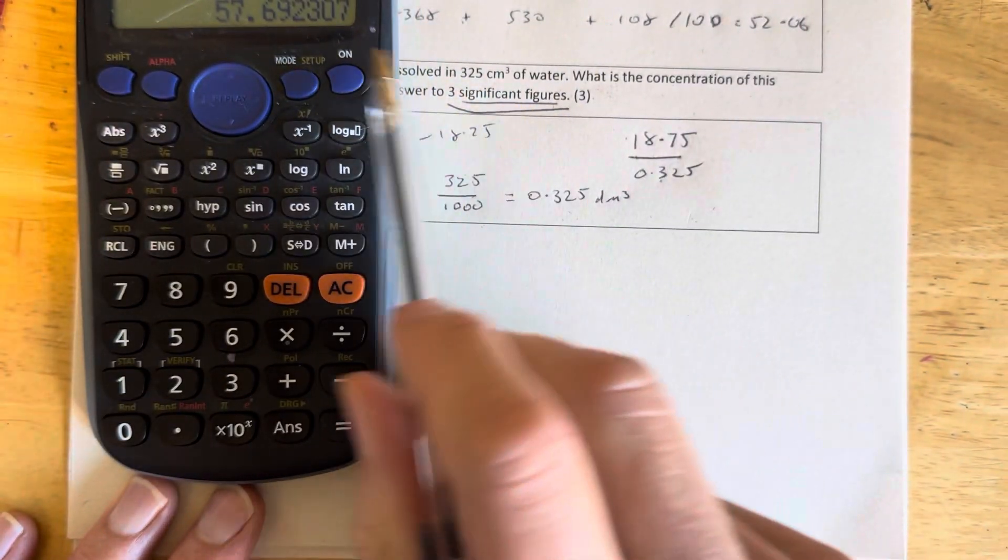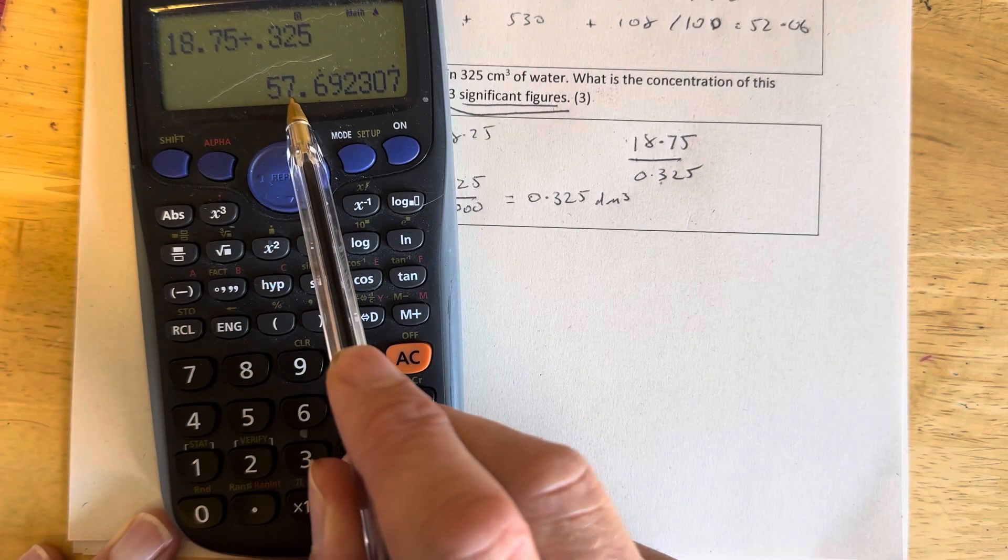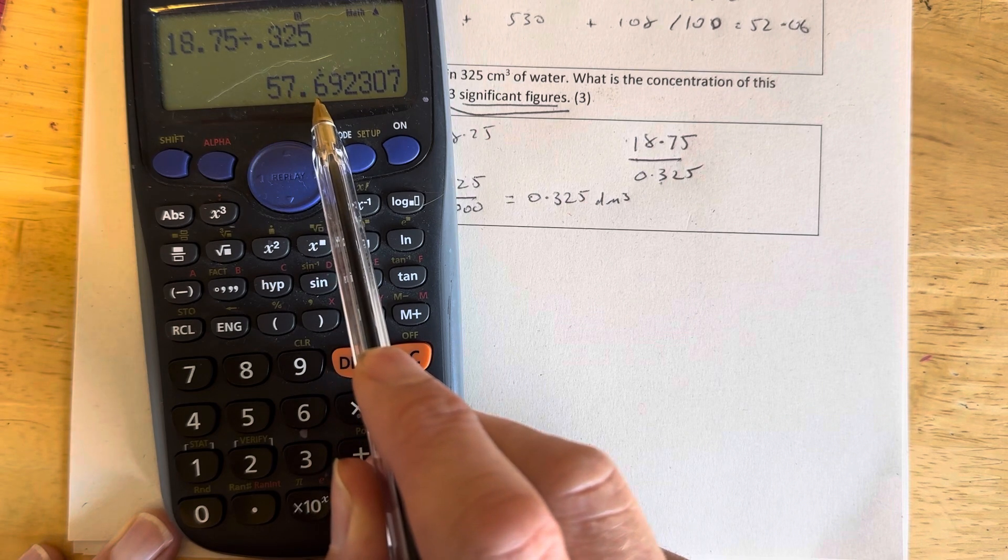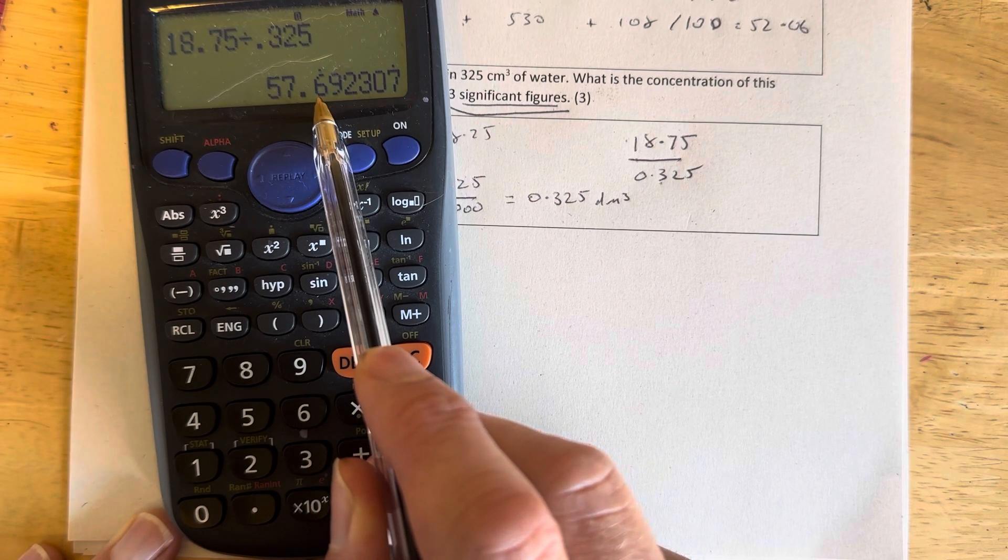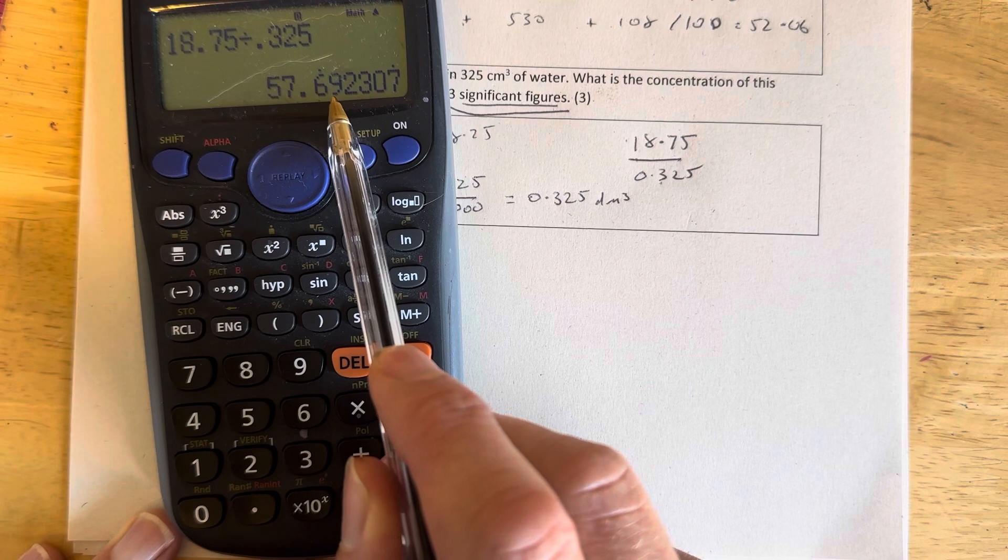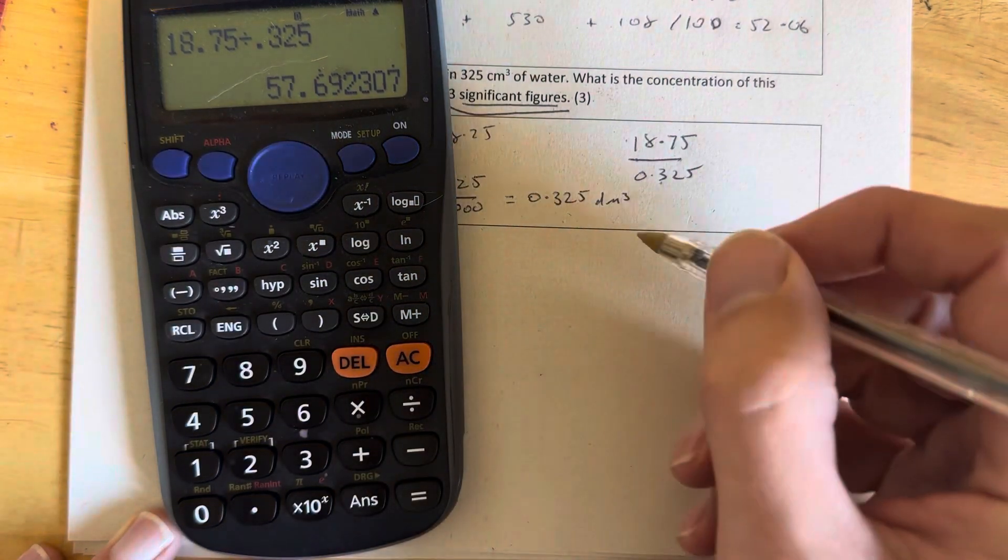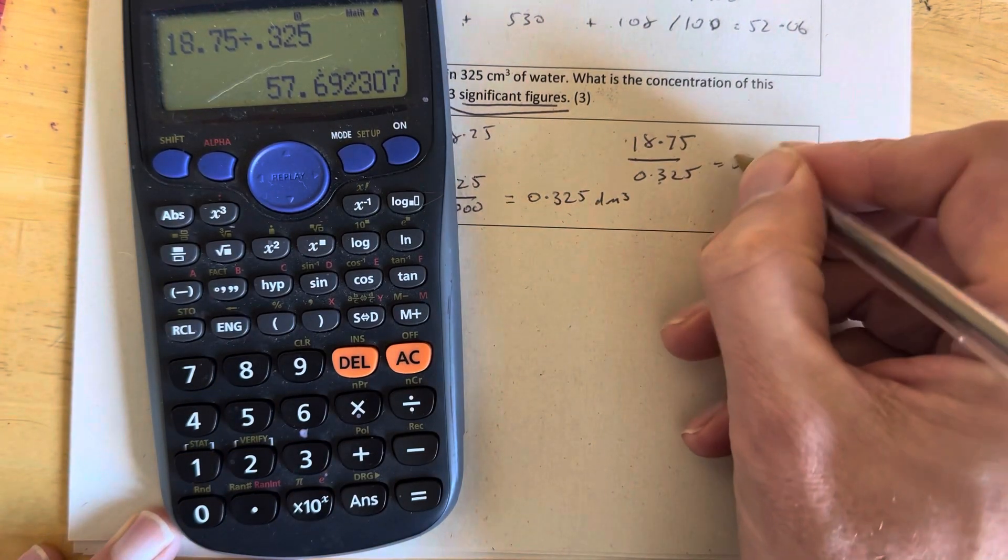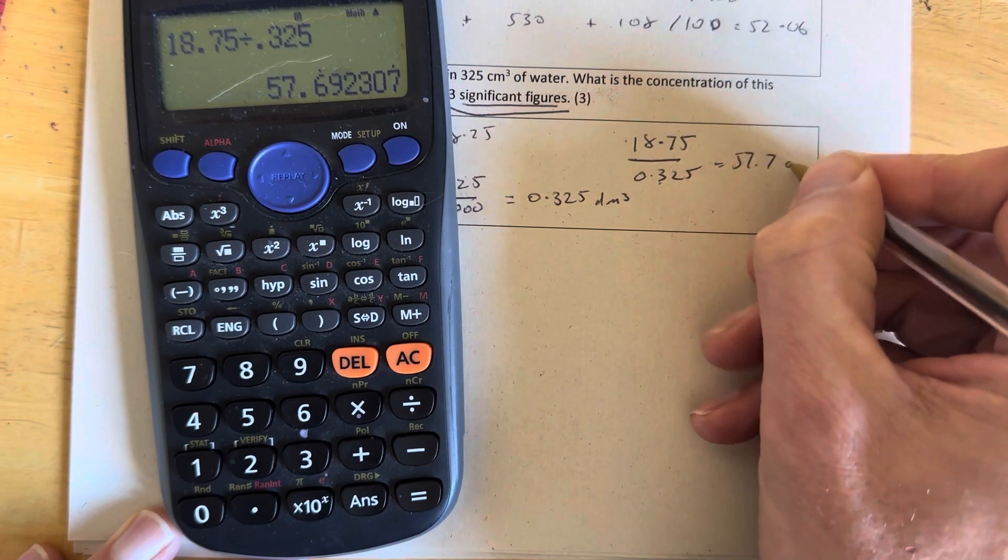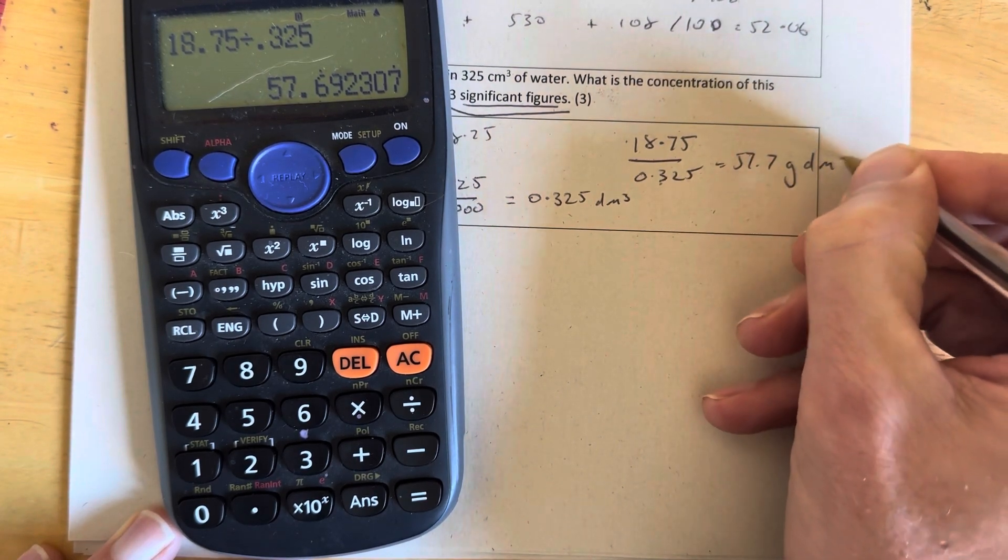Now remember we underlined three significant figures. There's our first figure, there's our second figure, there's our third figure. We need to look at the fourth, see if it's 5 or higher. It is, so we need to round that up now to 57.7, equals 57.7 grams per decimetre cubed.